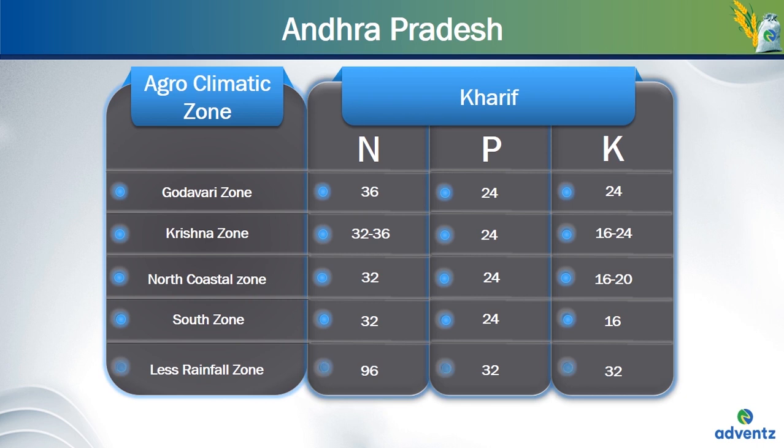For the crops planted in the North Coastal zone of Andhra Pradesh in Kharif season, the amount of nitrogen required is higher, which is 96 kgs per acre, the amount of phosphorus required is 32 kgs per acre and the amount of potassium needed is also 32 kgs per acre.